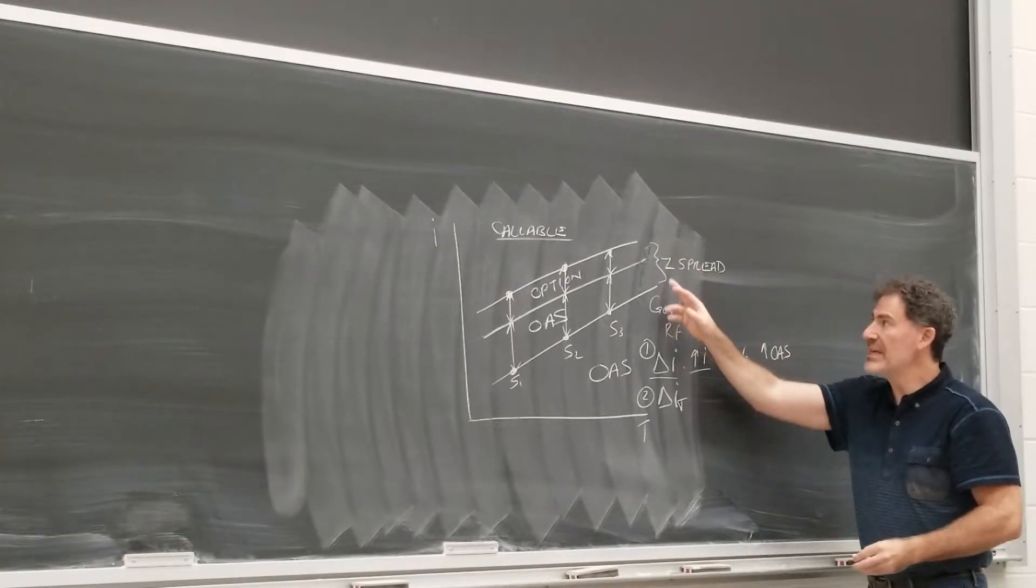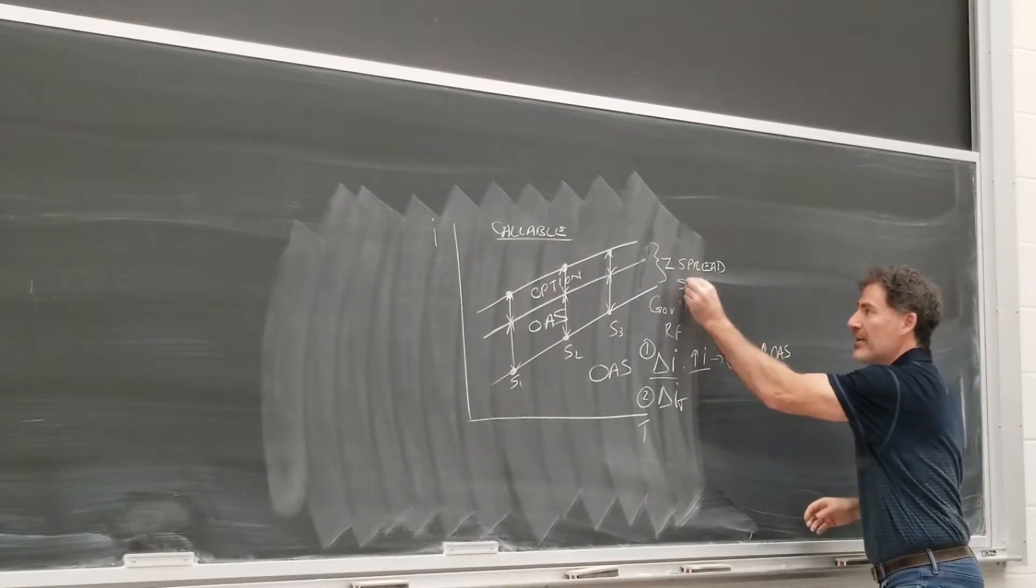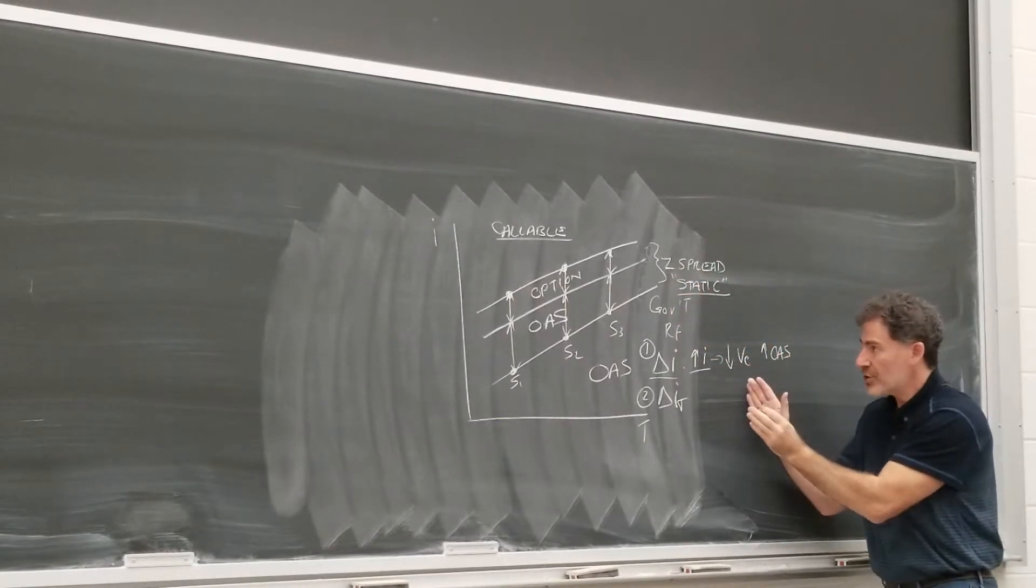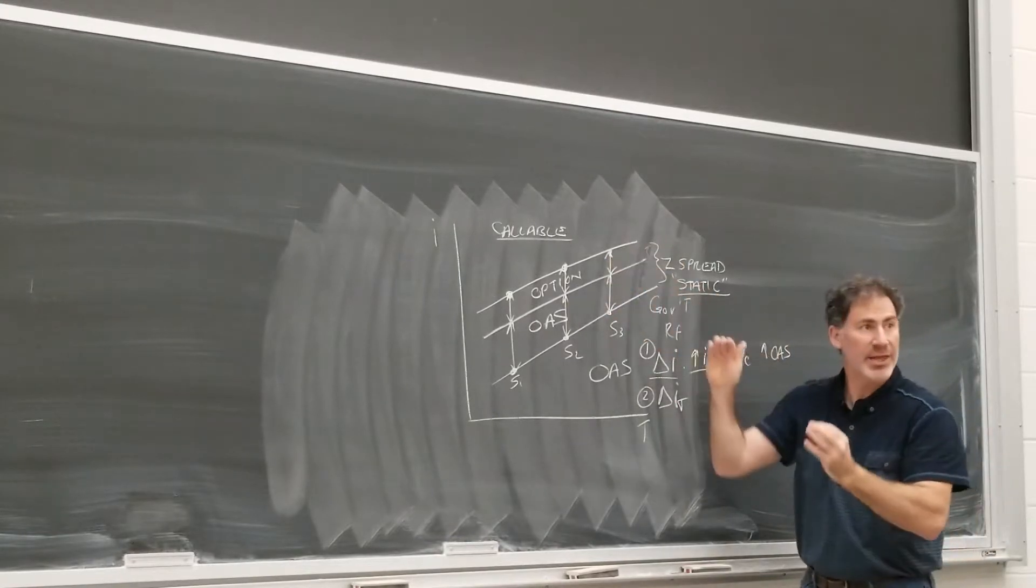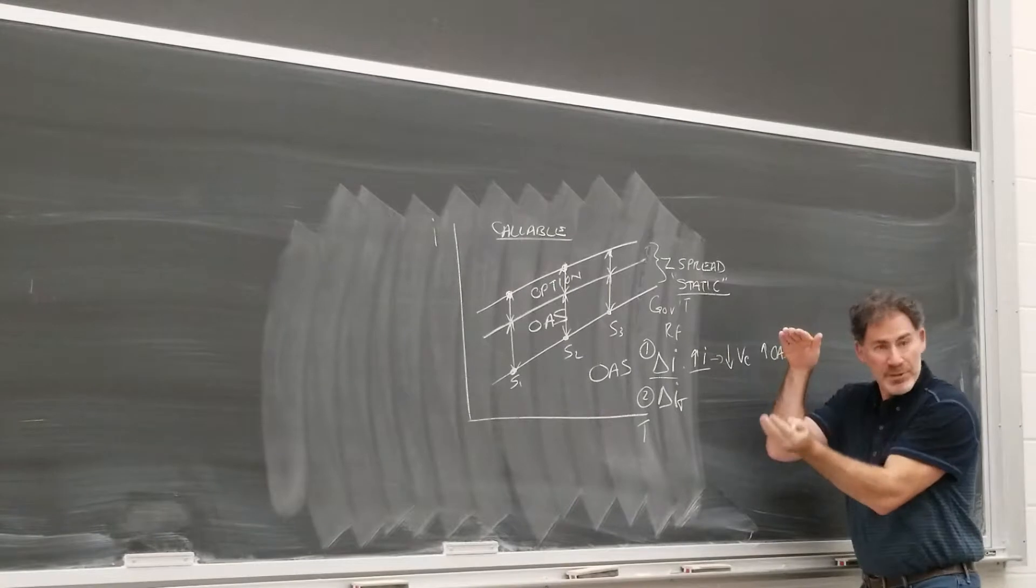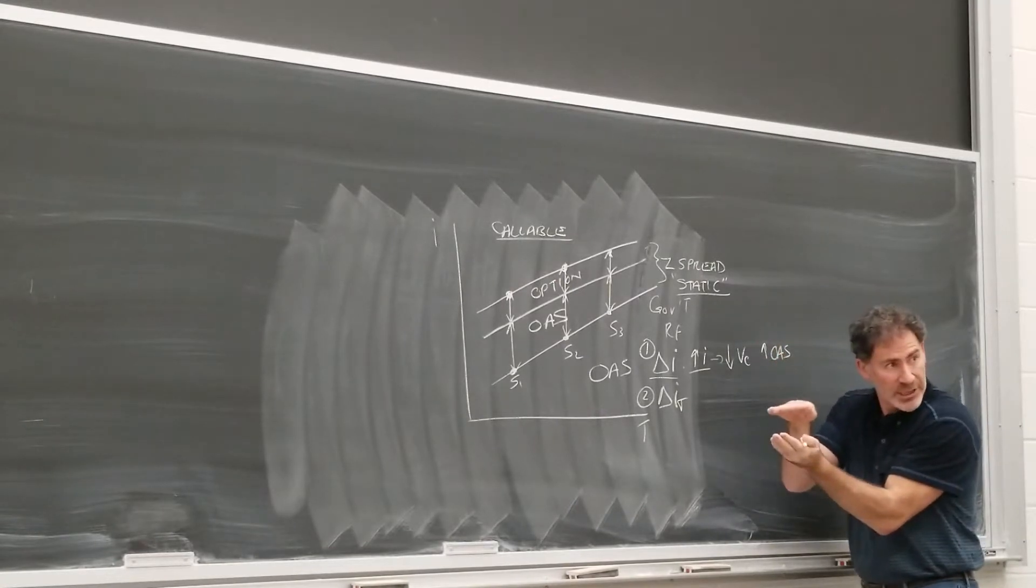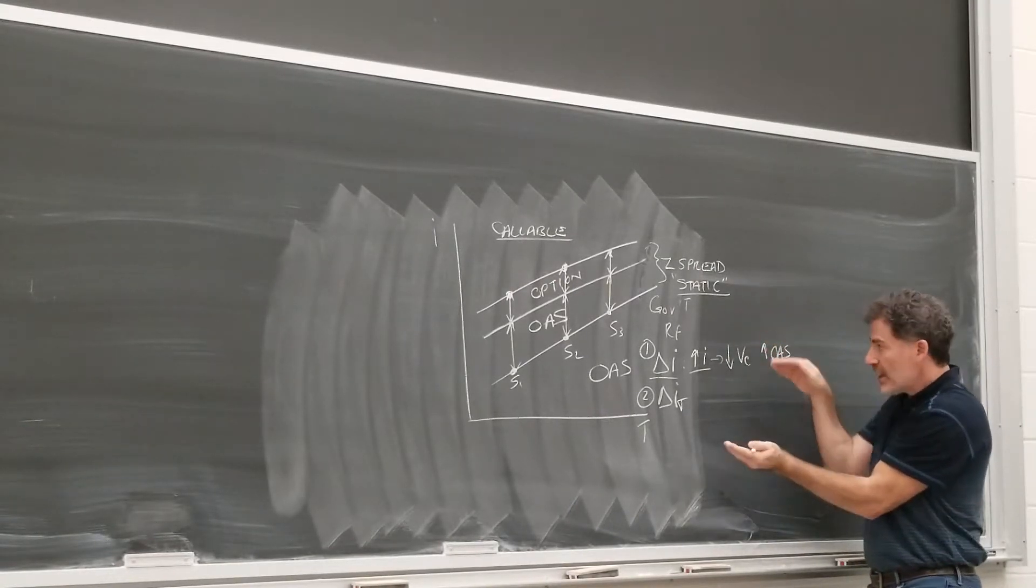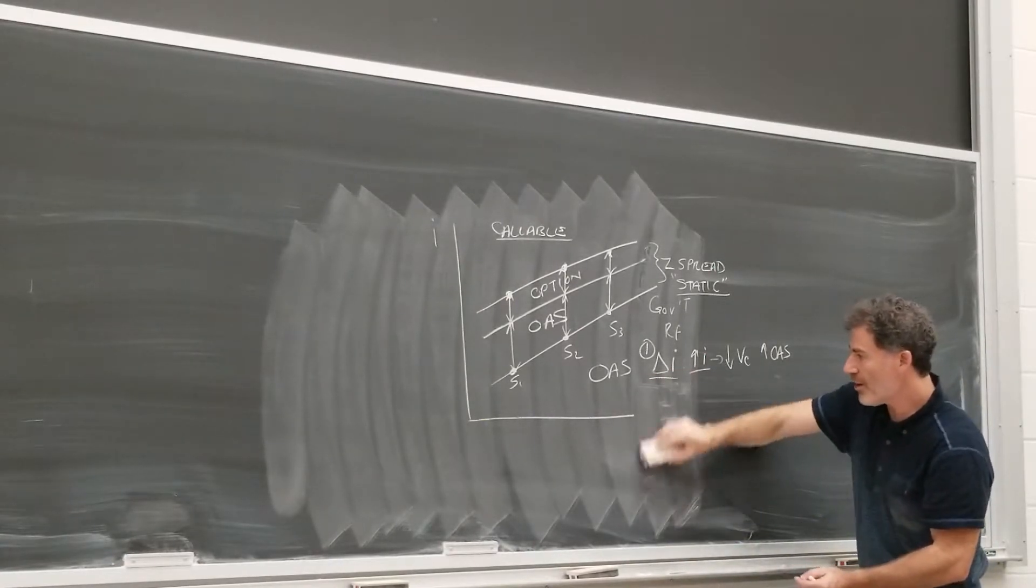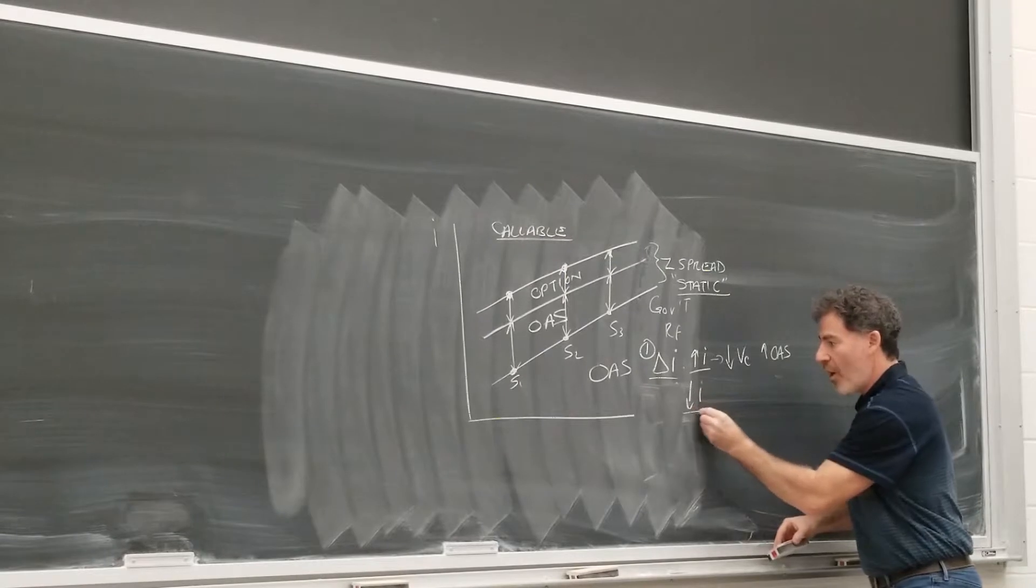Now, this Z spread we've talked about, we mentioned it's called a static spread. Static. It means it does not change. So only the components within it are changing. If interest rates rise, option value, the call option value decreases. So the OAS increases. I think we've got to know that.